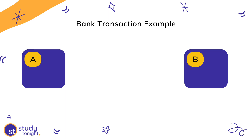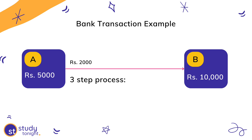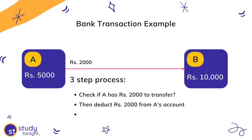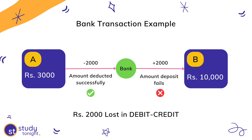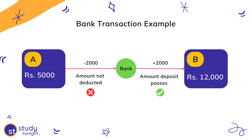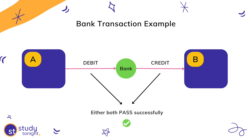Let's take one more example — the bank transaction example. If there are two bank accounts, A and B, where A has an account balance of Rs 5,000 and B has an account balance of Rs 10,000, and A wants to transfer Rs 2,000 to B. The whole process of money transfer is a three-step process: check if A has Rs 2,000 to transfer; if he has the amount, deduct it from his account; and add Rs 2,000 to B's account. It would not be right if we deduct money from A's account and do not credit it to B's account, because then Rs 2,000 will just vanish from the banking system. Or, if we credit the money to B's account but fail to deduct the same amount from A's account, then A will be the happiest customer of the bank, but the bank will lose Rs 2,000. Hence, either all steps pass successfully or all steps must fail and the user can try again — debit and credit passes, or debit and credit fails.